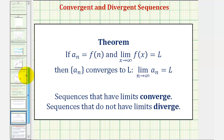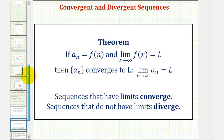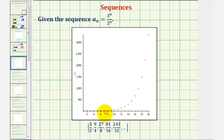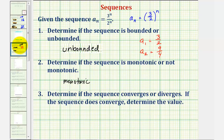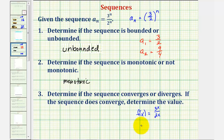Our sequence is going to diverge. Notice how from the graph, the terms increase without bound. To be more formal, we could let f of x equal three to the power of x divided by two to the power of x, and then take the limit of this function as x approaches infinity.